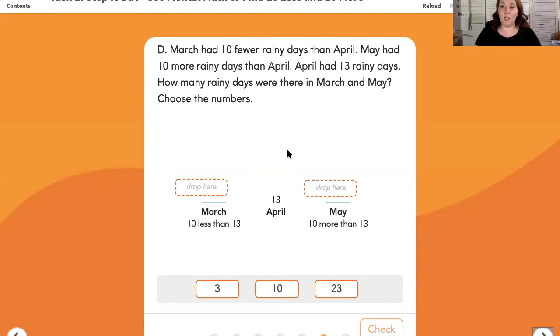Letter D. March had 10 fewer rainy days than April. May had 10 more rainy days than April. April had 13 rainy days. How many rainy days were there in March and May? Choose the numbers. So it says March, 10 less than 13. If I take away my group of 10, that would leave me with 3. In May, I have 10 more than 13. So that means I'm going to add another group of 10, which would give me 23.